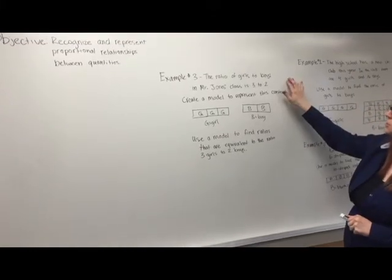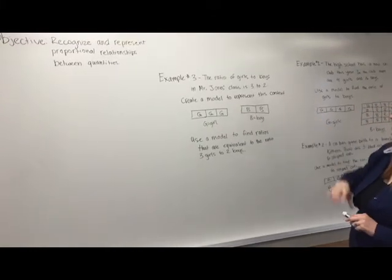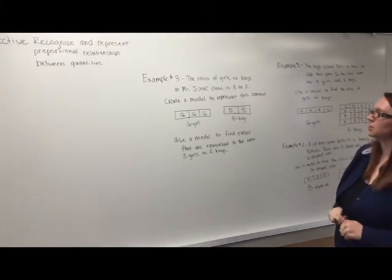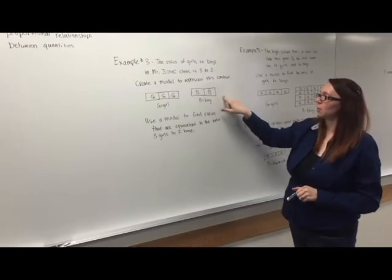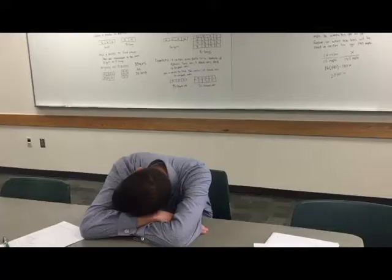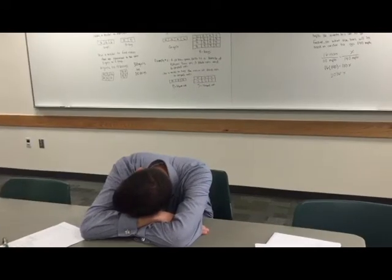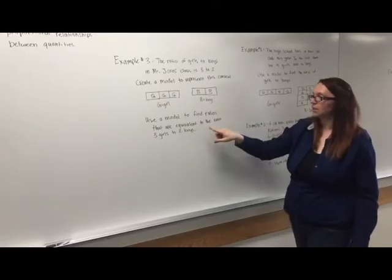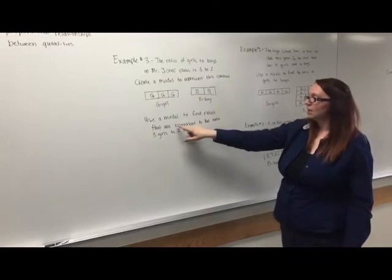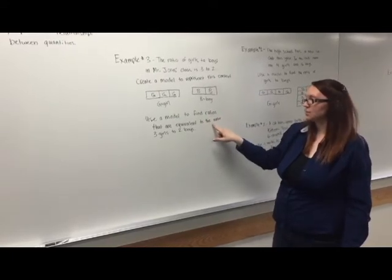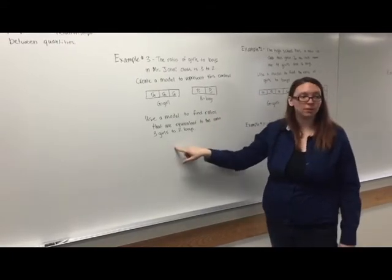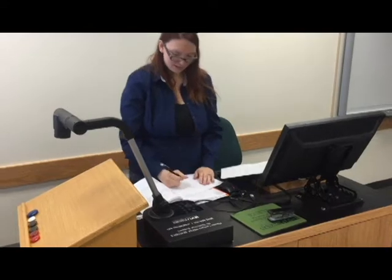Alright, so the ratio of boys to girls in Mr. Jones' class is 3 to 2. We're going to create a model. I've created a model here that represents this context. So we have 3 girls and 2 boys. Next we're going to use a model to find ratios that are equivalent to the ratio of 3 girls to 2 boys.